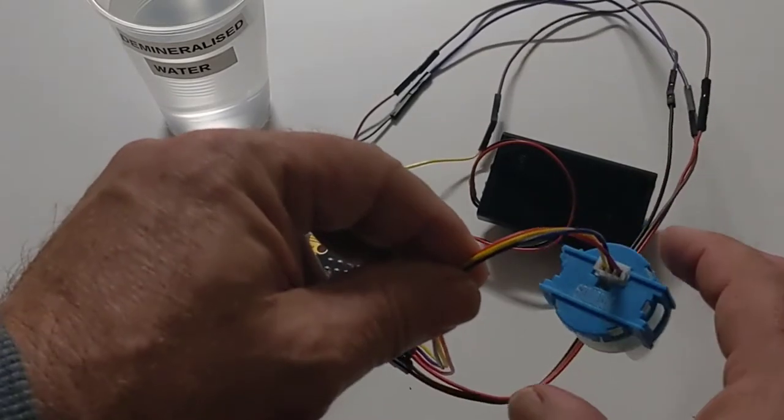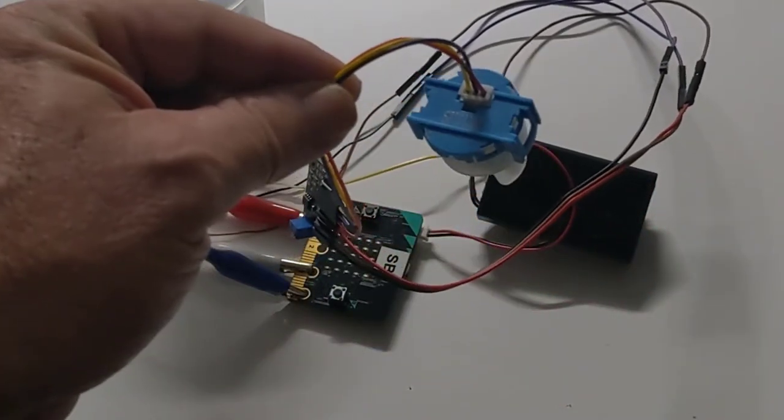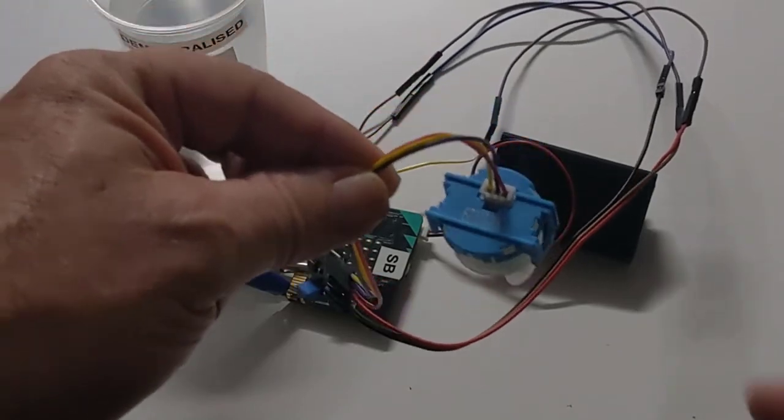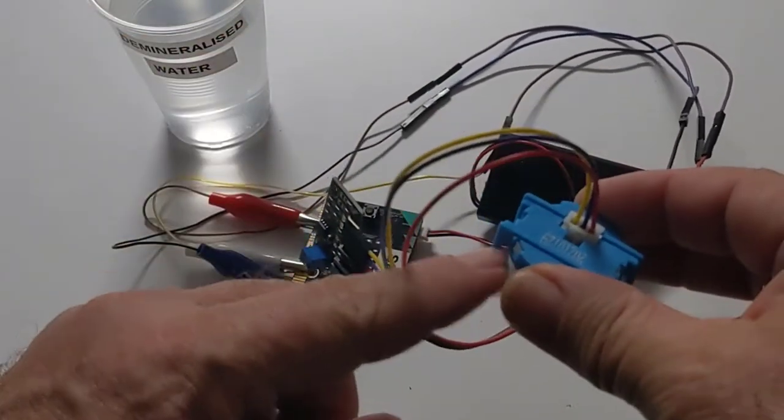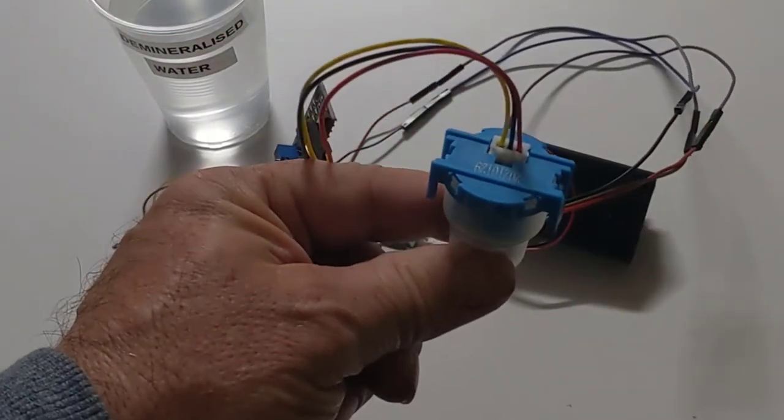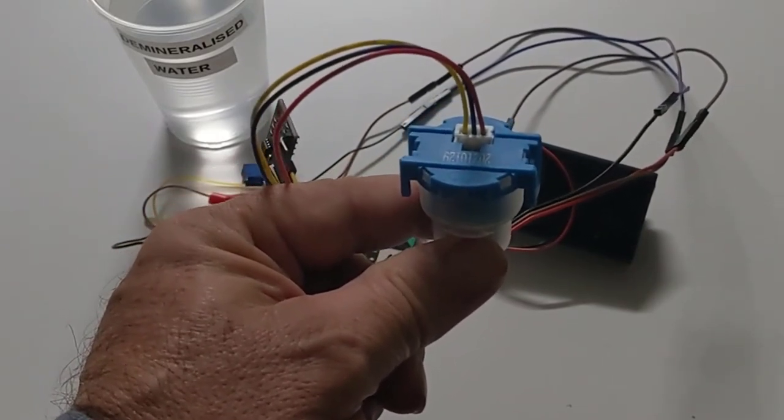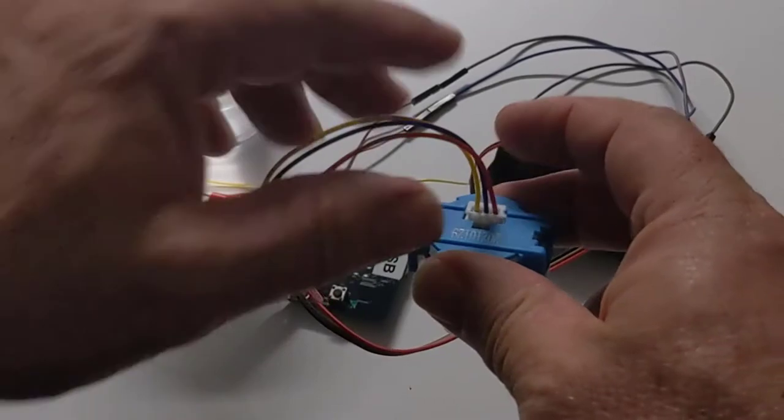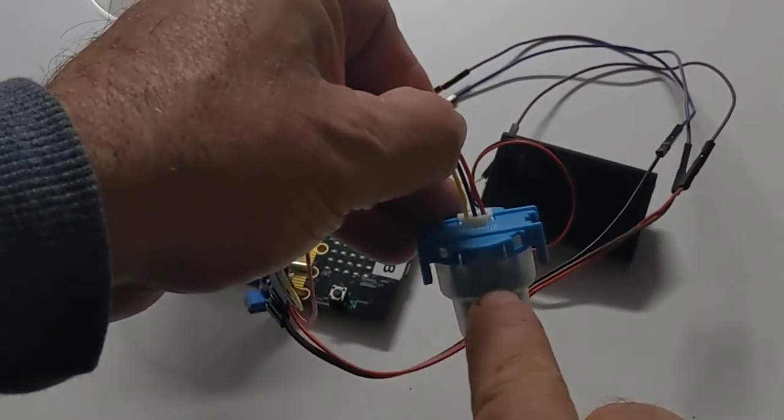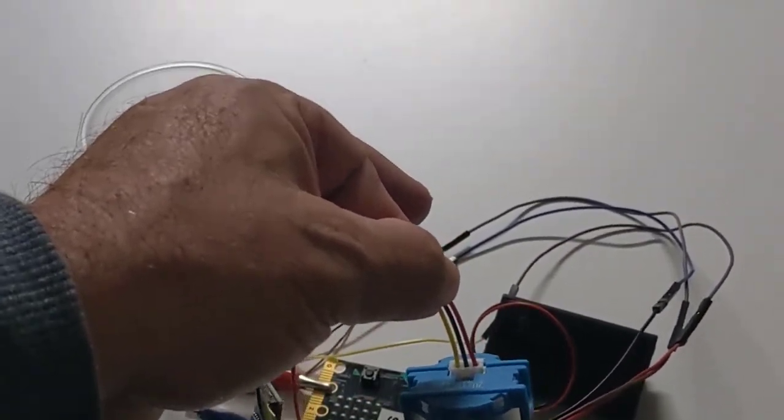One thing to be aware of, this turbidity meter isn't waterproof above the blue cover so you don't put the whole meter into the water. You just need to put from about here down into the water.